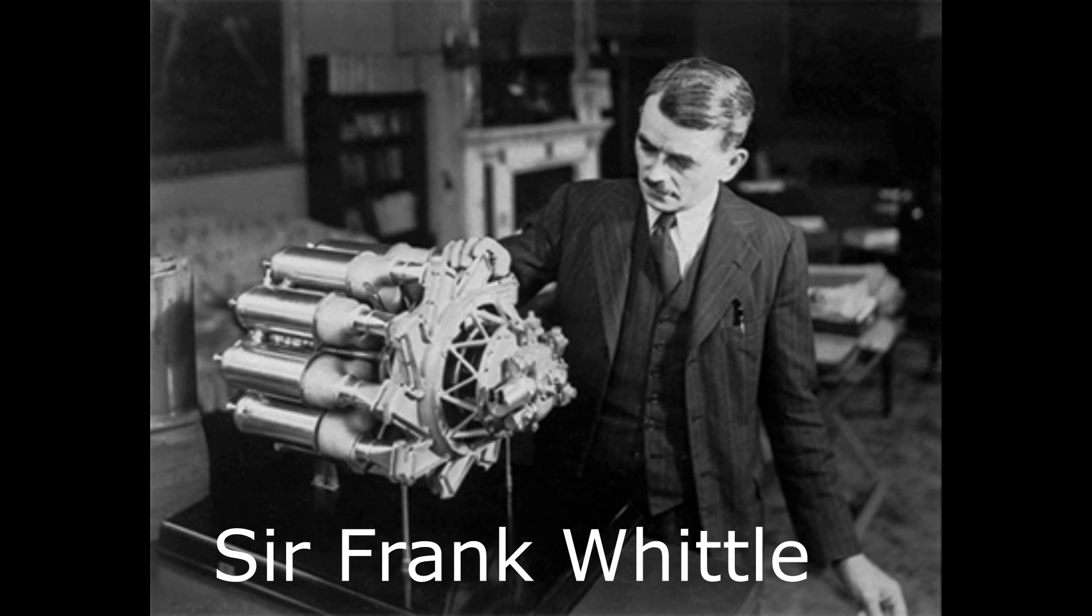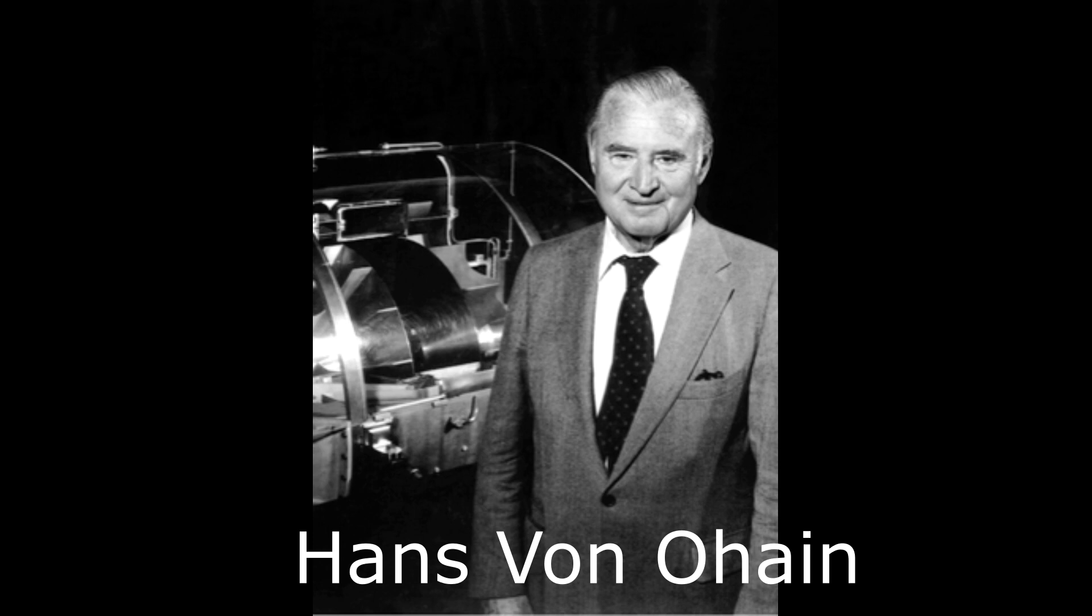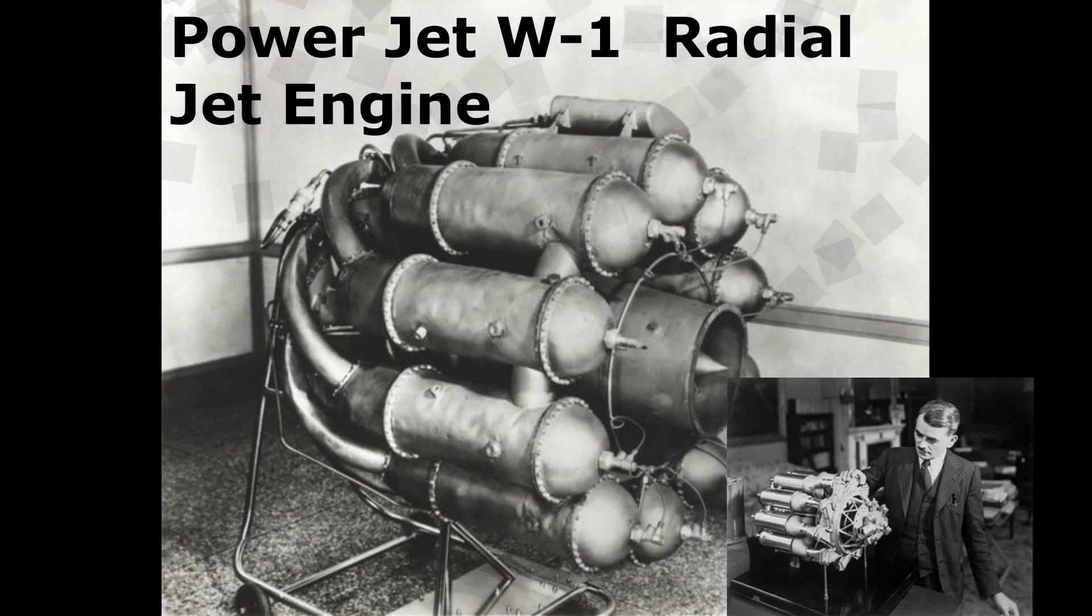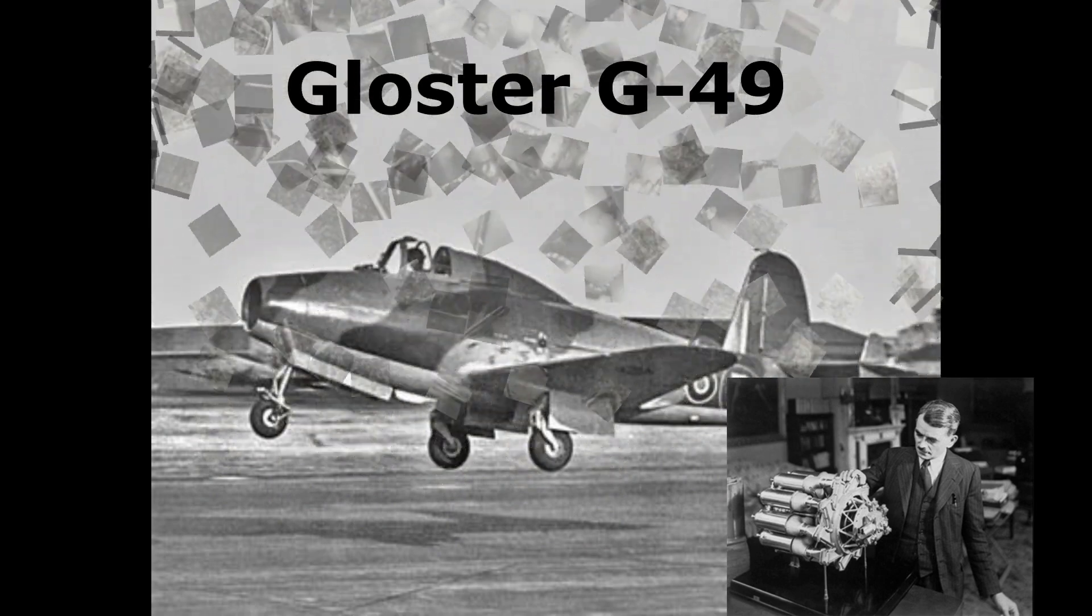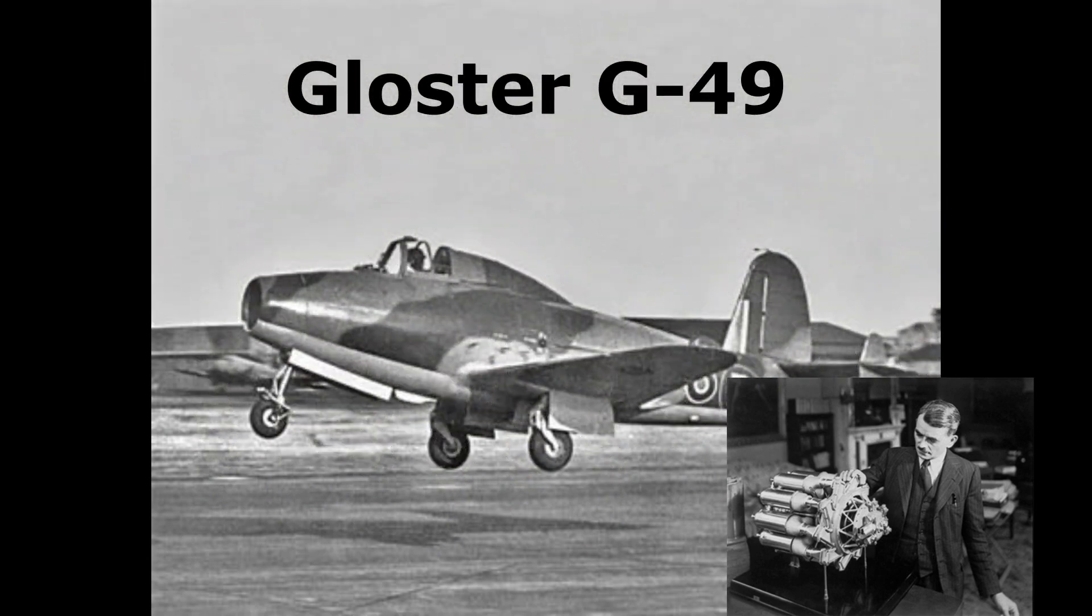In 1914, British scientist Frank Whittle and German scientist Hans von Ohain worked on gas turbine engines in parallel with each other. As a result of these studies, the Power Jet W-1 radial flow engine developed by Frank Whittle was used for the first time in the Gloster E.28/39 aircraft.